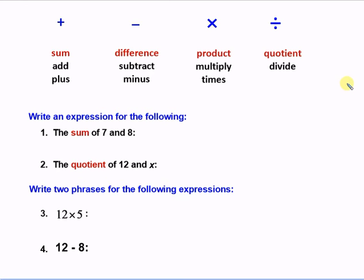We can talk about expressions using symbols or words. For example, we could say that the expression 3 plus 4 can be written like this using symbols or numbers. We can also say the sum of 3 and 4 or add 3 and 4 or 3 plus 4. All of those are ways to say or to express an expression.